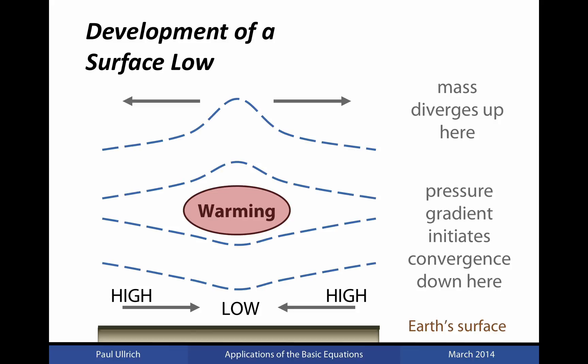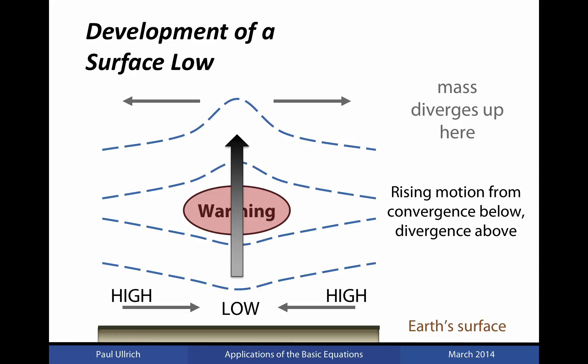Along the surface then, along this constant height surface, we then have an induced pressure gradient which initiates convergence down here. So near the Earth's surface we have convergence of flow, and near the top of the atmosphere we have divergence of flow. As air is now being pumped into the fluid column from below due to converging motion, and pumped out of the fluid column above because of diverging motion, this then triggers rising motion through the interior of the fluid column, and hence completing our cycle.